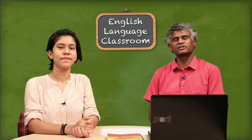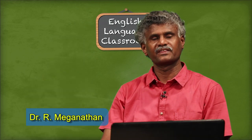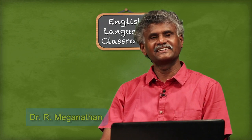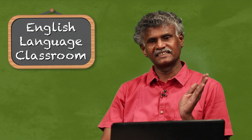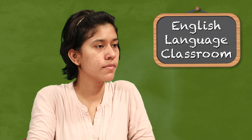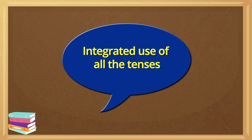Hello learners, welcome to the wonderful world of English language classroom. Learners of classes 6, 7, 8 — we have been discussing learning time and tense under the series Grammar in Context. We have covered more or less all the tense forms: present tense, past tense, and future tense. In each tense: simple present, present continuous, present perfect, and present perfect continuous, likewise for past as well as future. We have so far done 8 parts; this is the 9th part. This part is about the integrated use of all the tenses.